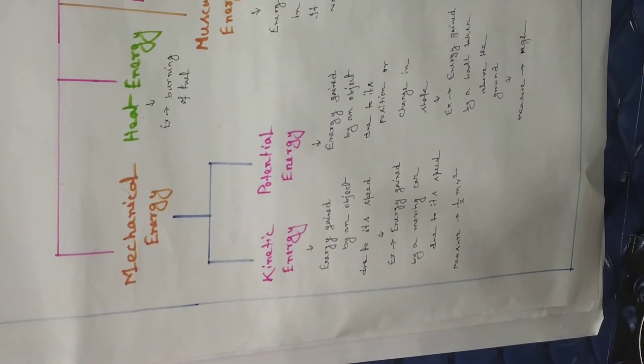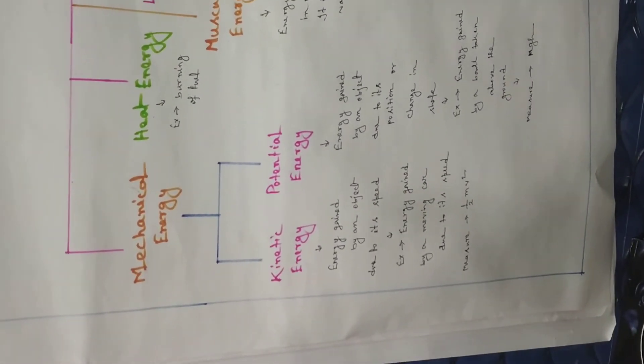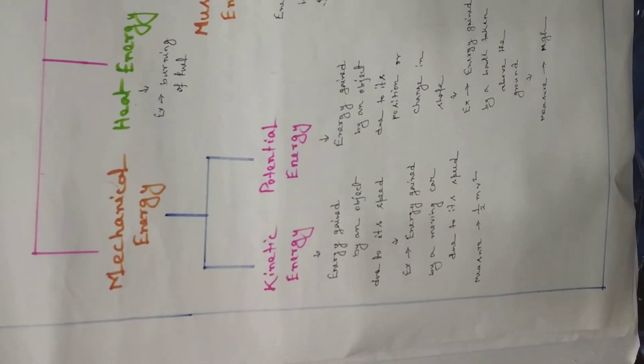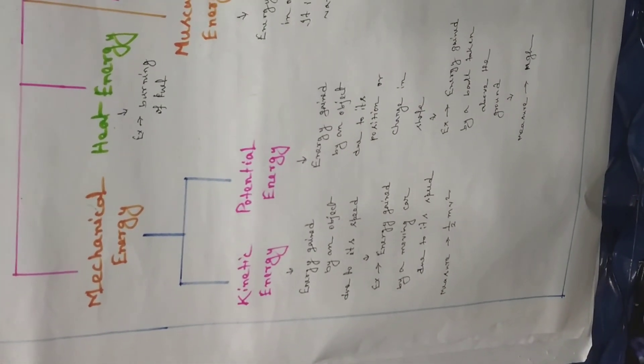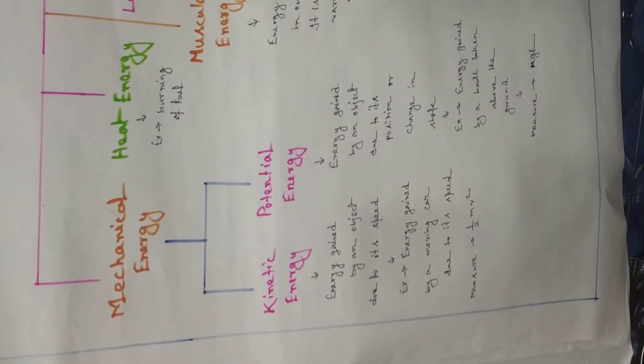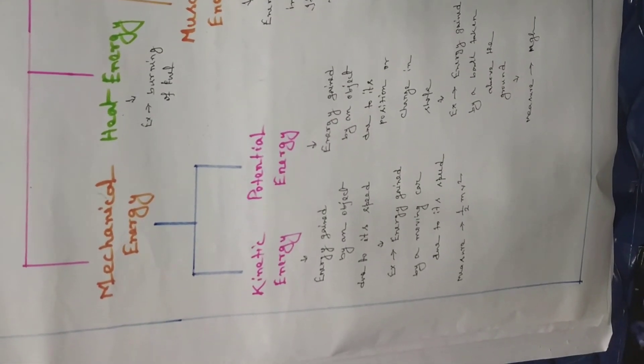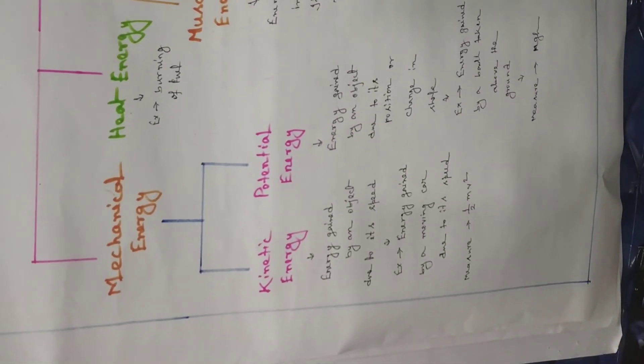Mechanical energy is of two types: kinetic energy and potential energy. Energy gained by an object due to its motion is known as kinetic energy, and energy gained due to its position or shape is known as potential energy. The measure of kinetic energy is half mv², and the measure of potential energy is m × g × h, where m is mass, g is gravitational acceleration, and h is the height of the object.